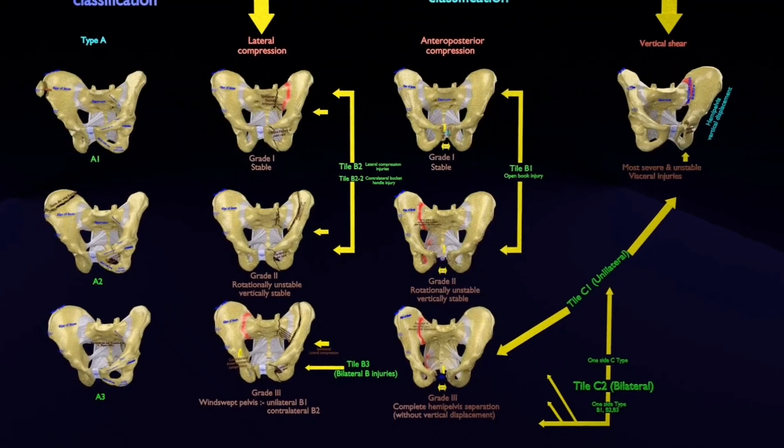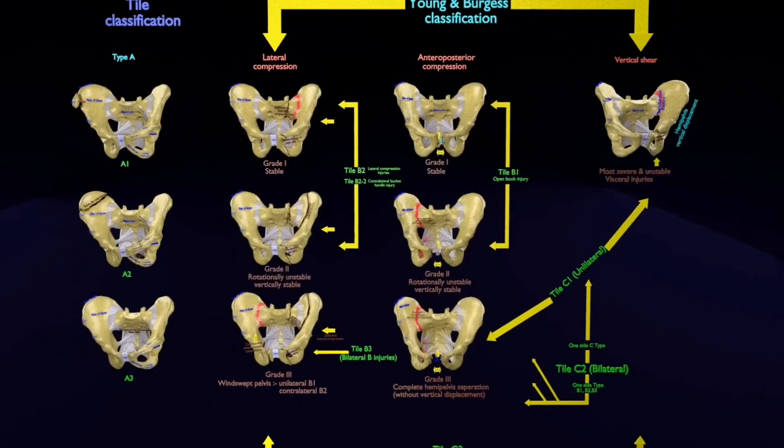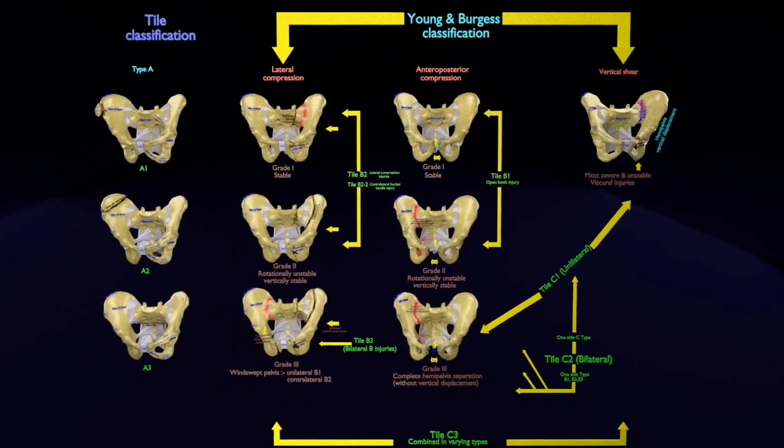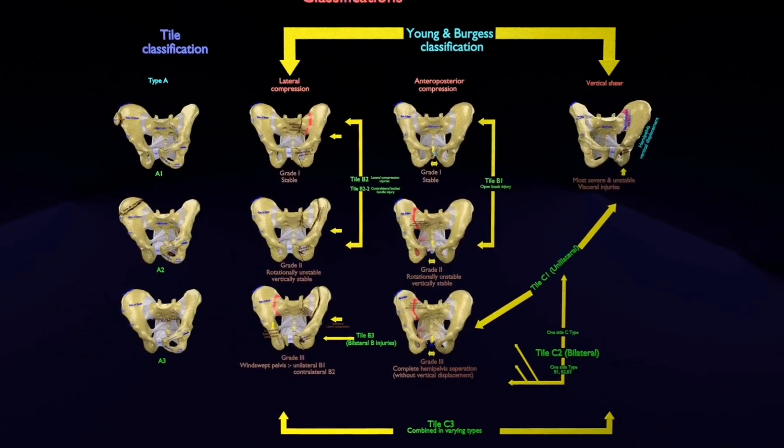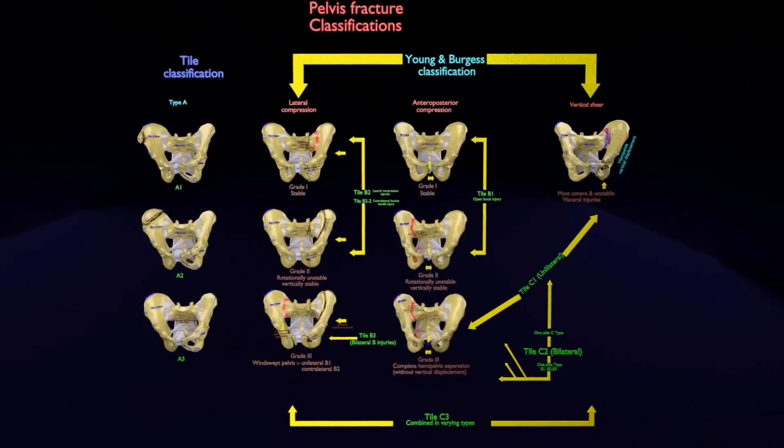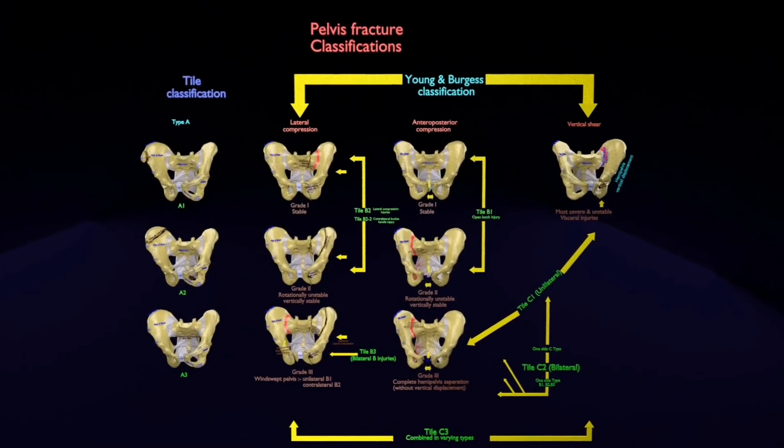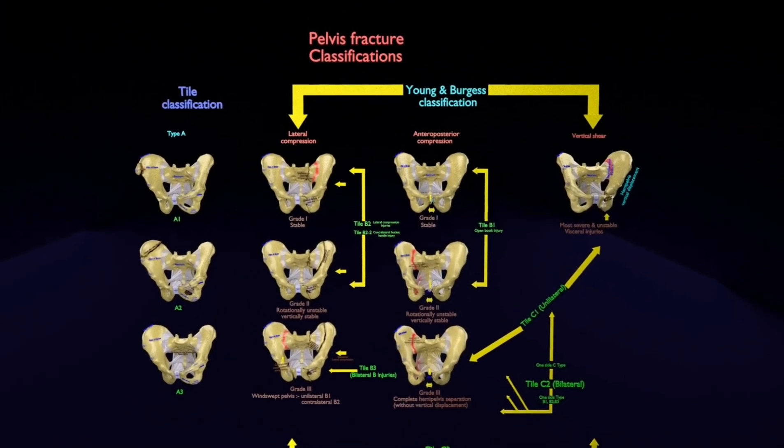The fracture of pelvis are commonly found in falls, motor vehicle collisions, a vehicle hitting a pedestrian, or a direct crash injury. This includes any break of the sacrum, hip bones, namely ischium, pubis, and or ileum or coccyx.